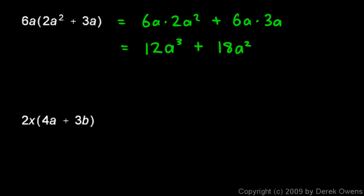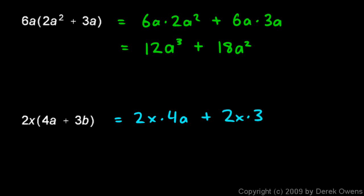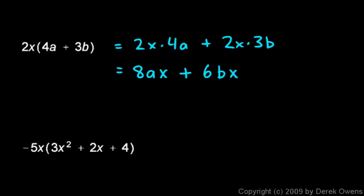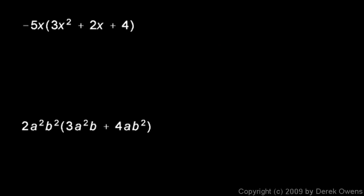The next example is 2x times (4a plus 3b). This equals 2x times 4a plus 2x times 3b. 2x times 4a gives us 8ax, and 2x times 3b gives us 6bx. I've written those in alphabetical order, which is fairly standard practice.